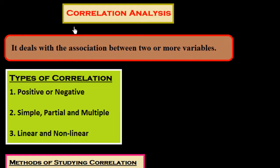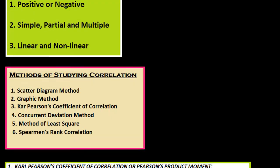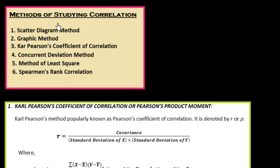In this session we study about correlation analysis. It deals with the association between two or more variables. We have different types of correlations: positive or negative, simple, partial and multiple, linear and nonlinear. We have different methods to find out the correlation analysis. The methods include the scatter diagram method, the graphic method, Karl-Pearson coefficient of correlation, concurrent deviation method, and method of least squares.